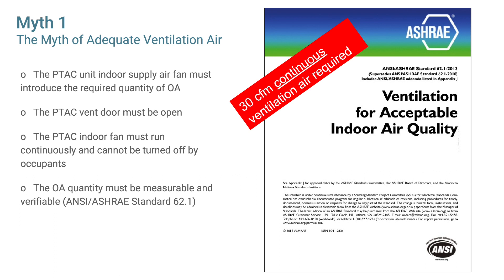Most building codes reference ANSI ASHRAE Standard 62.1 for required ventilation rates, which usually requires a minimum of 30 cubic feet per minute of continuous ventilation air. With the absence of a dedicated outside air ventilation system, the PTAC unit must be relied on to provide proper introduction of fresh air.